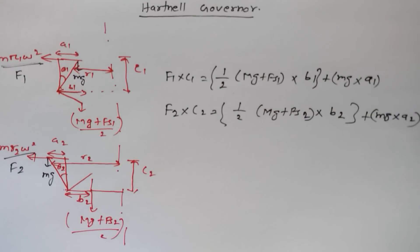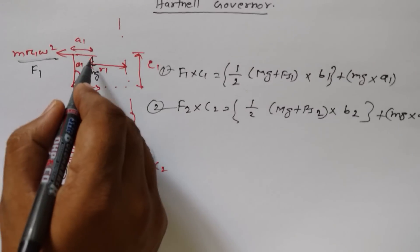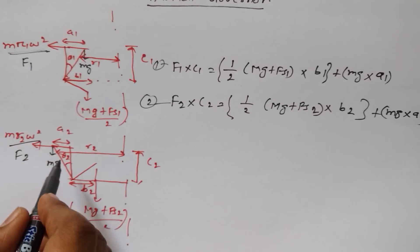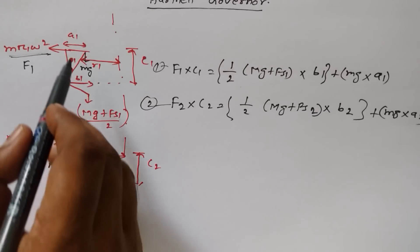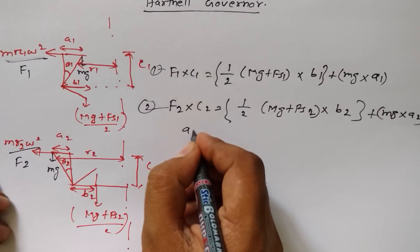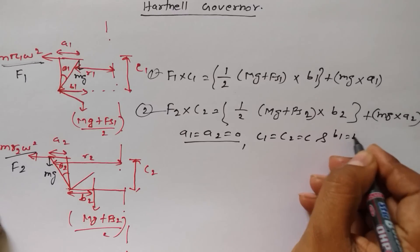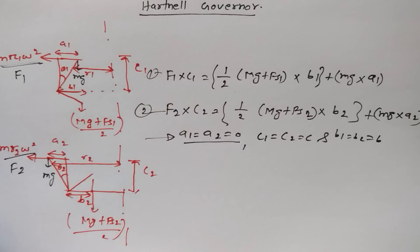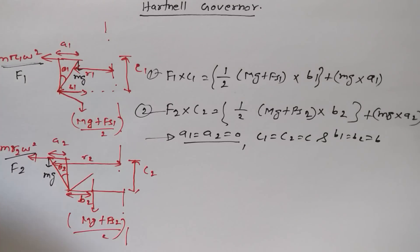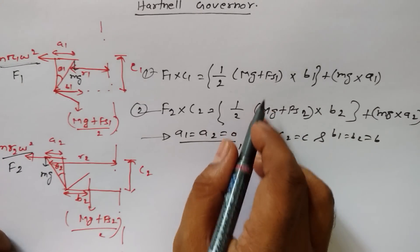These two equations are really needed — equation one and equation two. We need to consider one more thing: the arms are inclined by theta one and theta two angles. Because of this inclination we get two points a1 and a2. Suppose these two arms are not inclined but vertical — then a1 = a2 = 0. We are also considering c1 = c2 = c and b1 = b2 = b. This condition makes it easier to solve the equations.